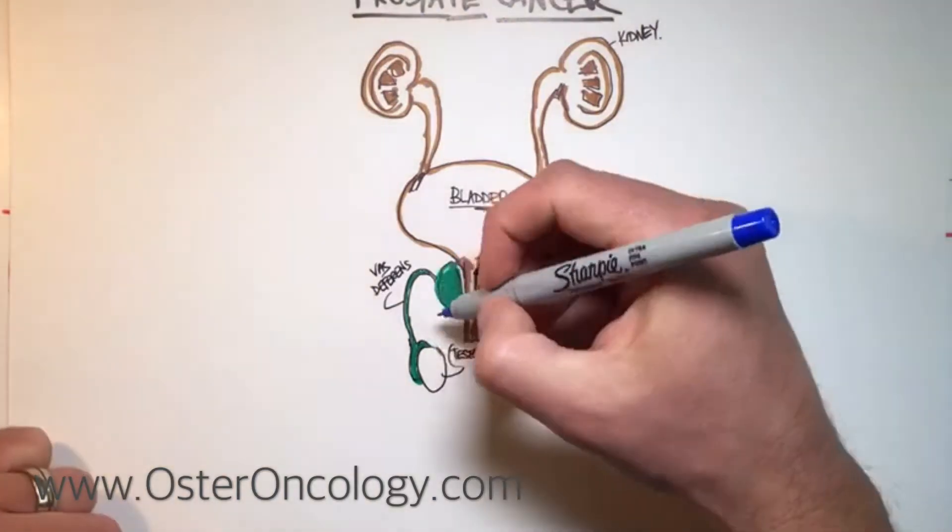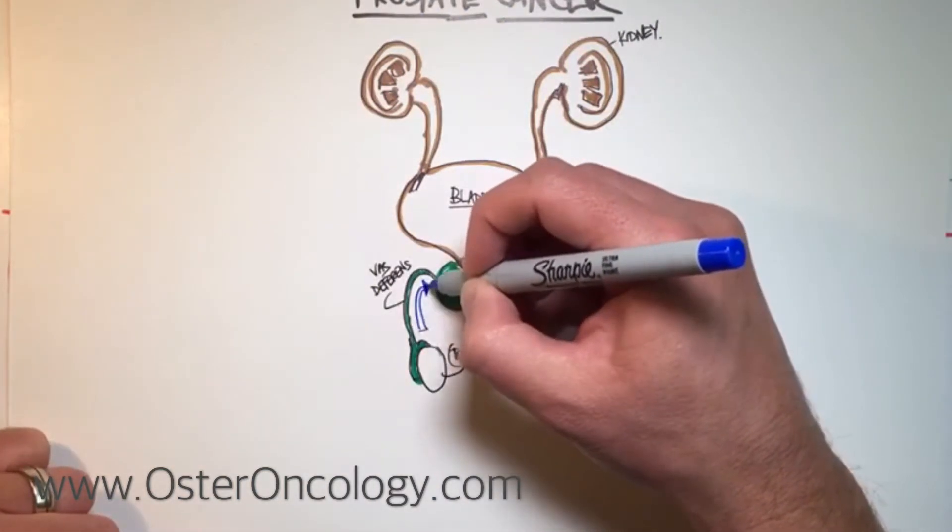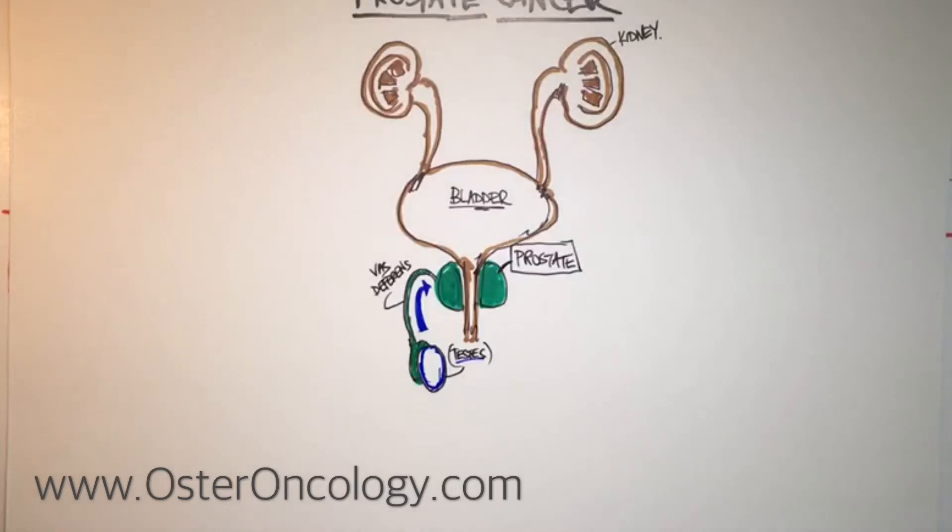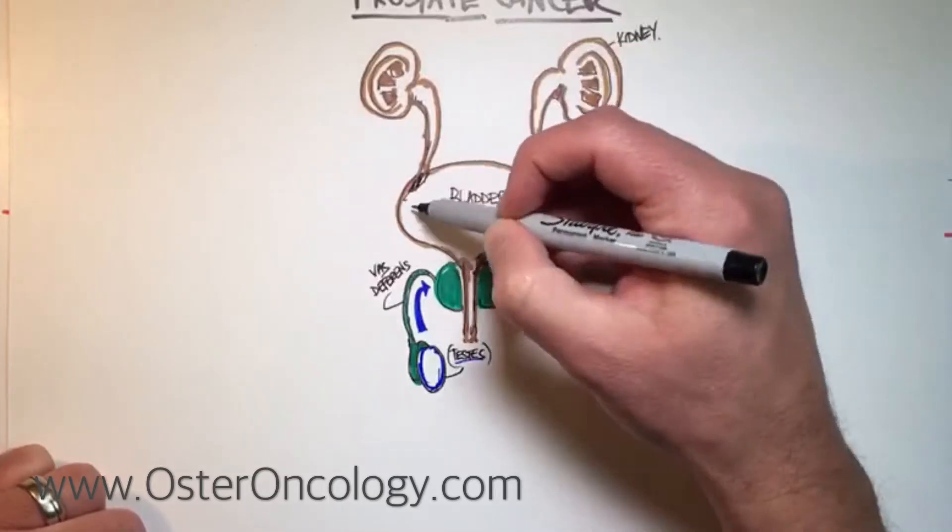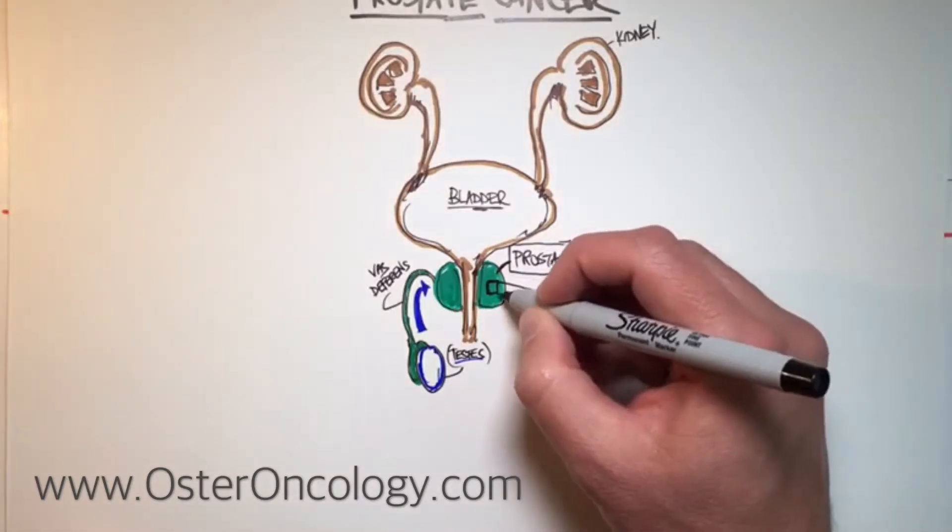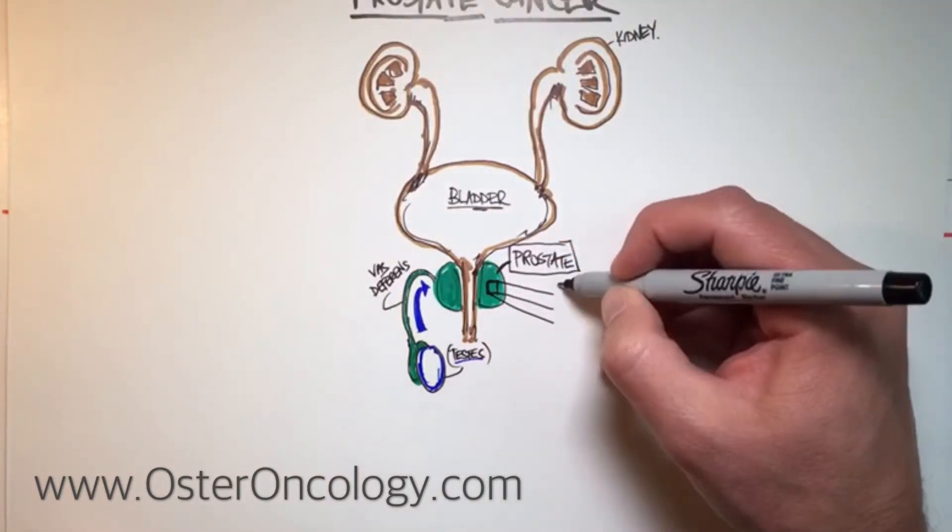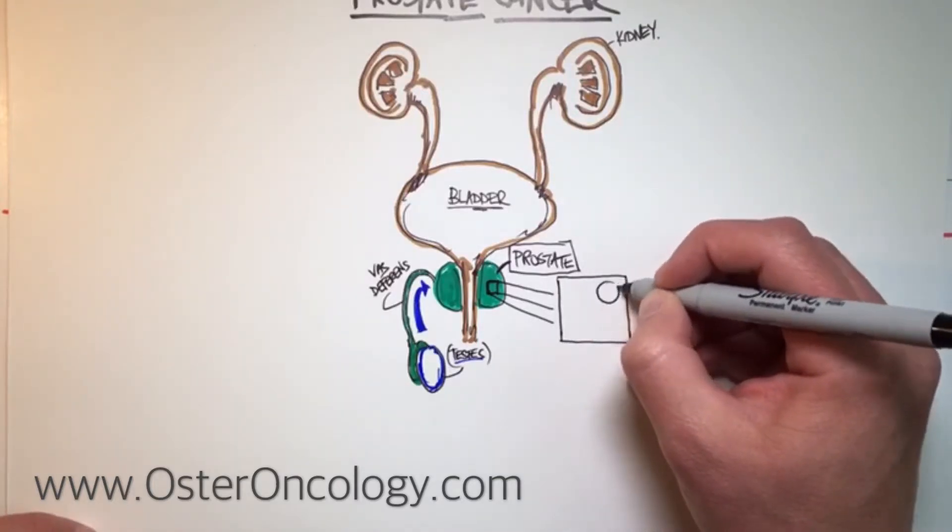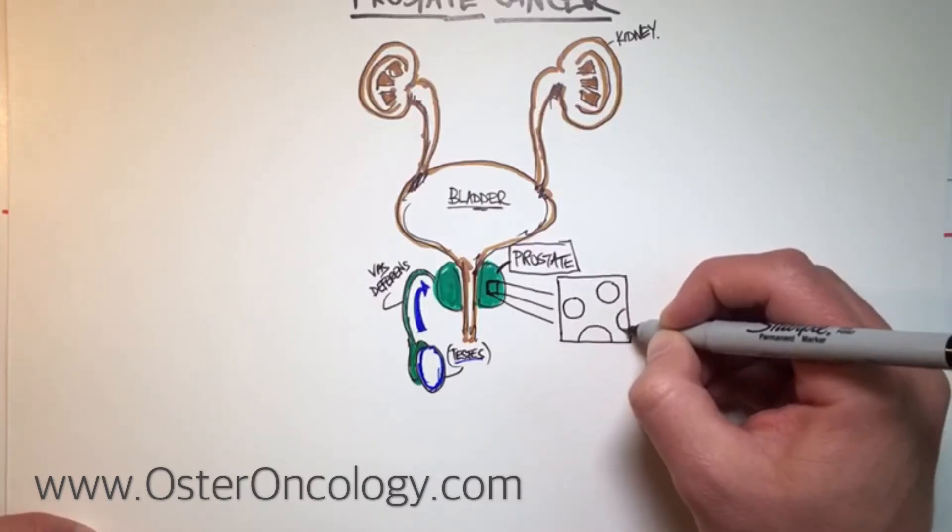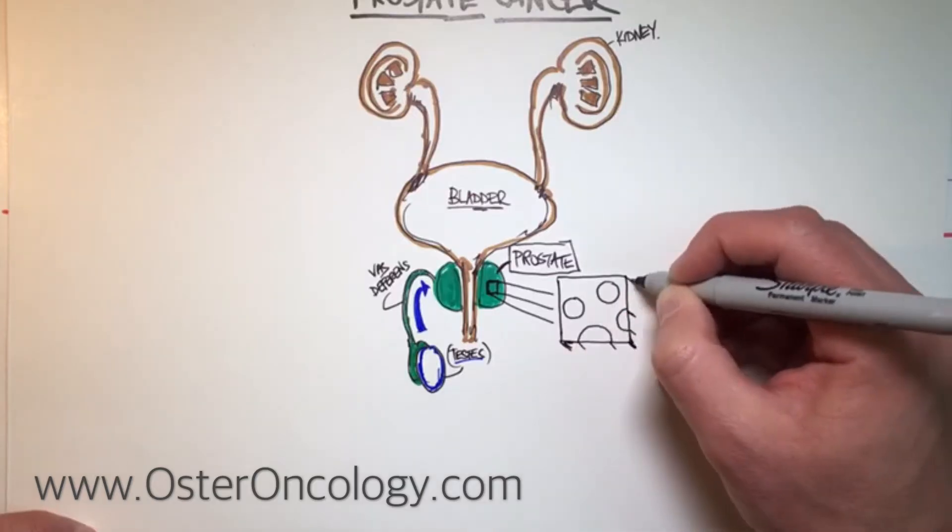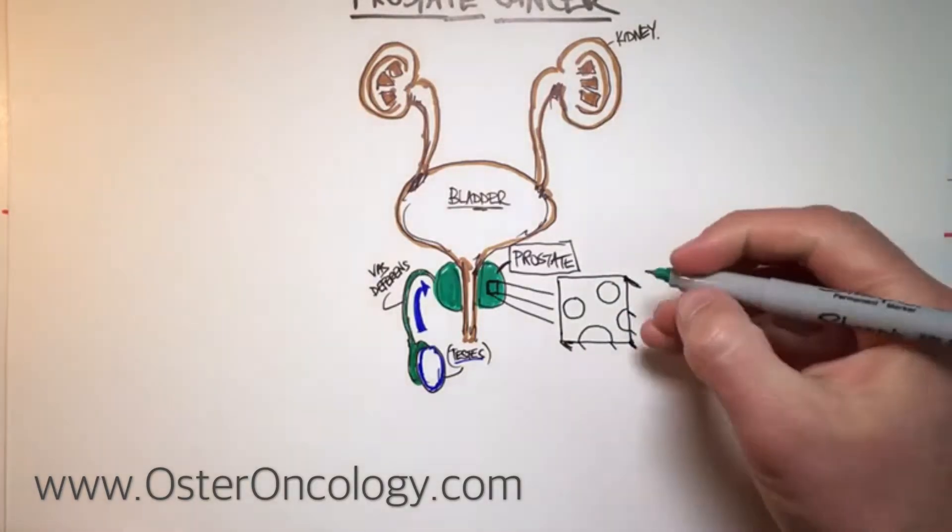So when the sperm, at the time of ejaculation, rises up through the vas deferens and finds itself passing through the prostate, the prostate has secretions that it contributes to the ejaculate as well. So it increases the volume. Actually, what the prostate contributes is about one-third of the total volume of the ejaculate, but also it releases a very specific enzyme called the prostate-specific antigen, which helps achieve the proper viscosity. So it actually liquefies the ejaculate a little bit, so it gets the right viscosity.